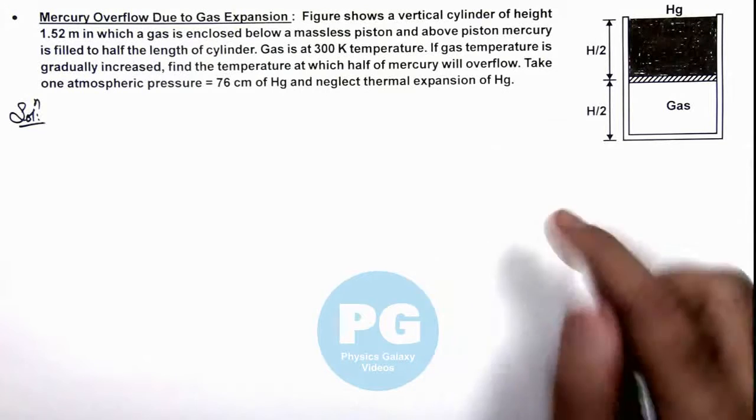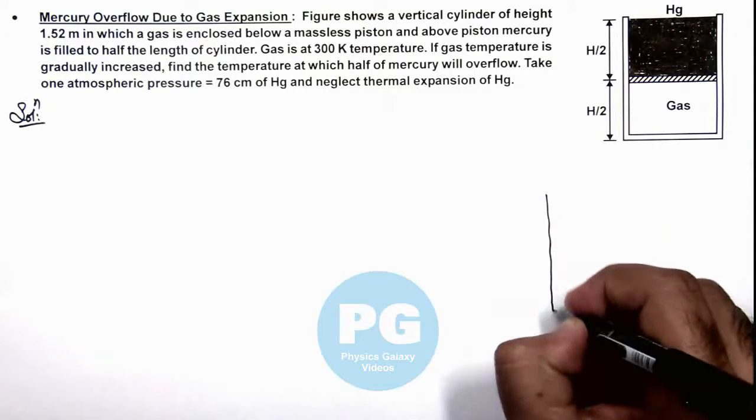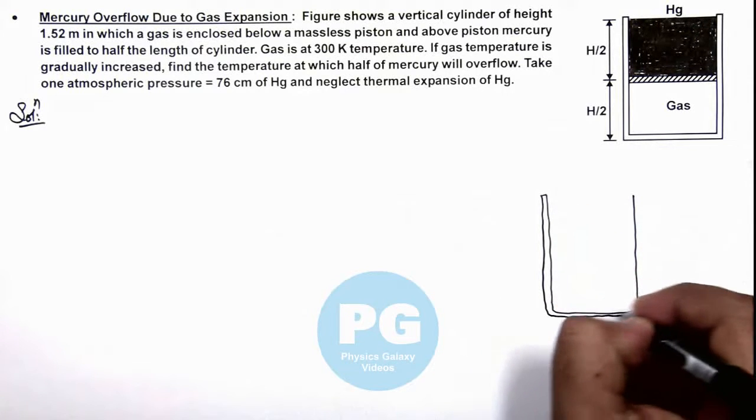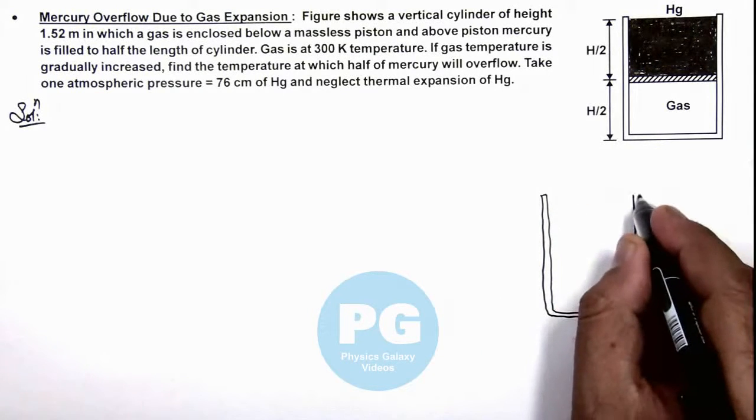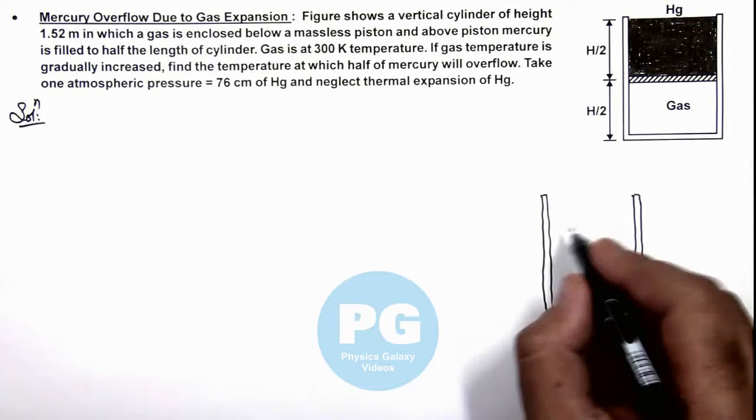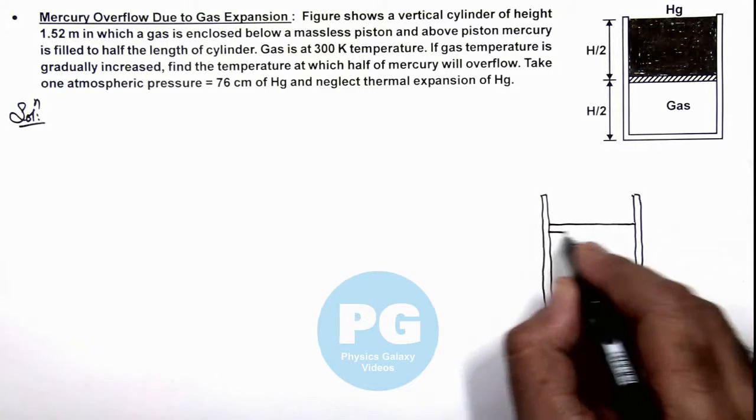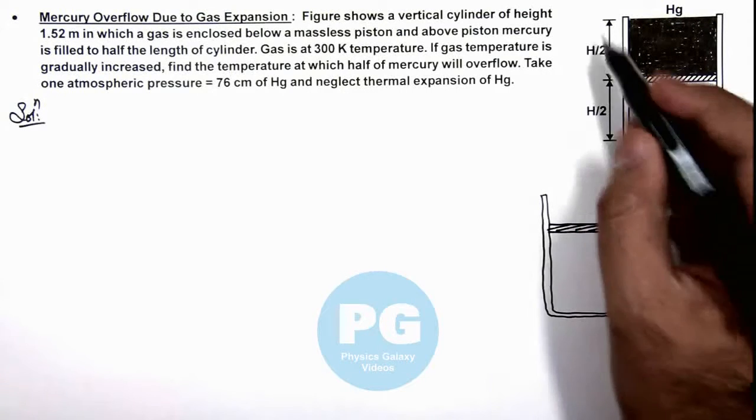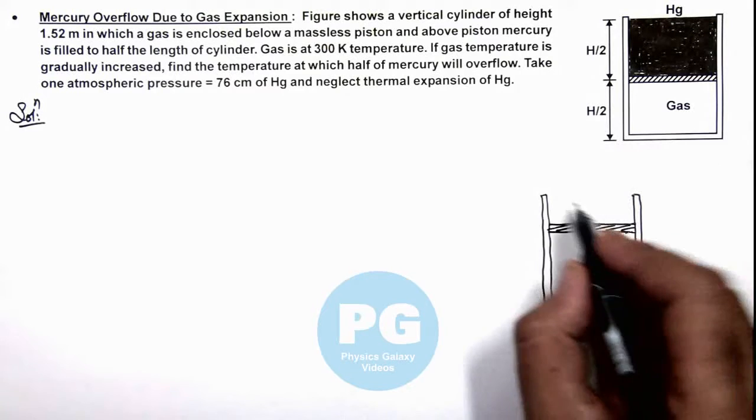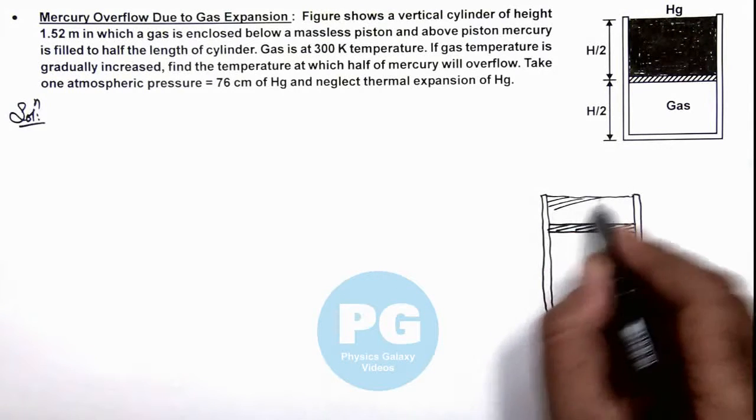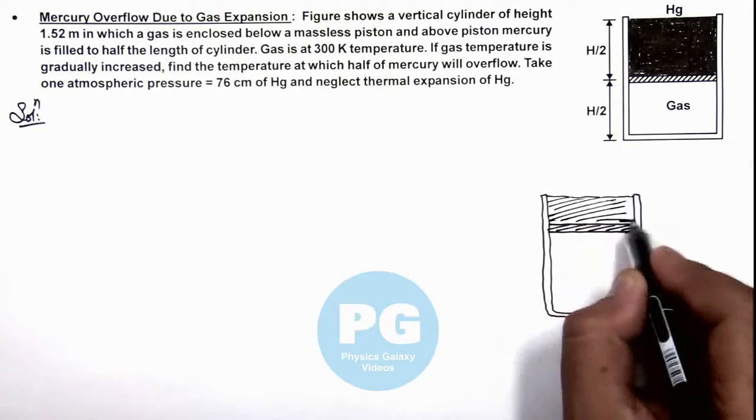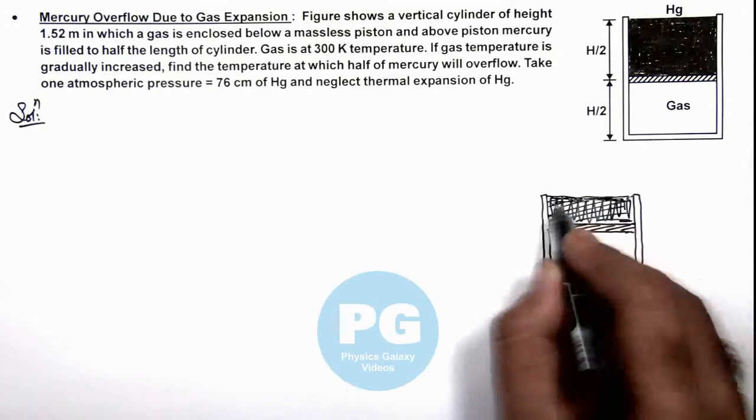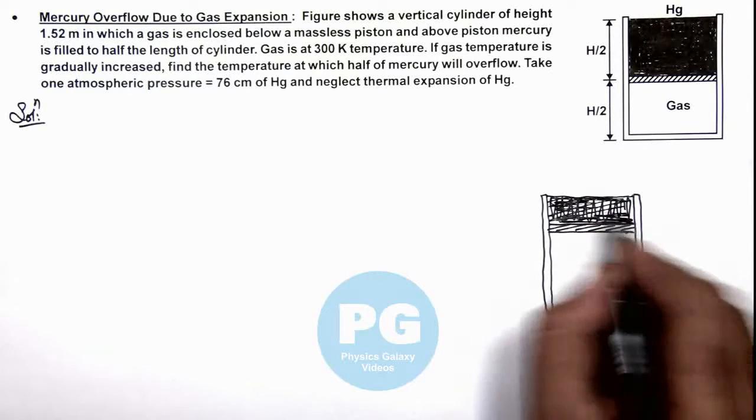So here we can see, if we draw the picture again, this is the situation when gas is heated up to a higher temperature. In this situation, half of mercury will overflow. That means out of this 76 centimeter length, mercury is now there above the piston only up to a length of 38 centimeters, that is half of it. This is the mercury which is filled over here.